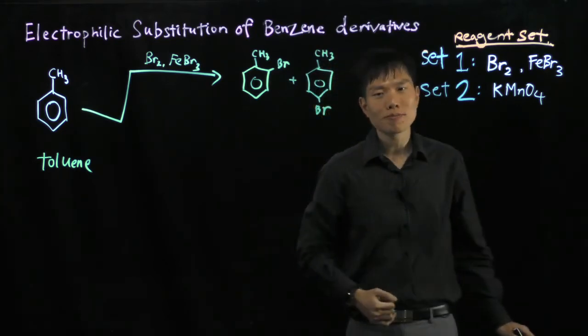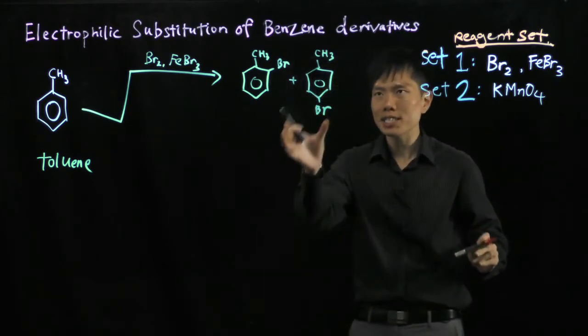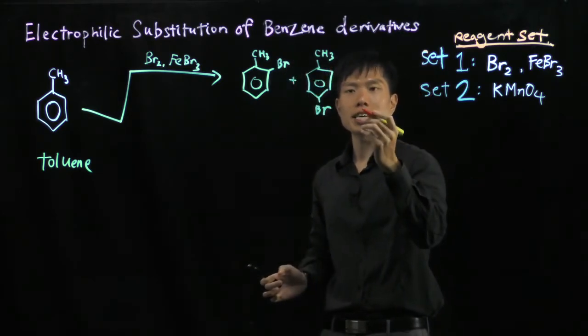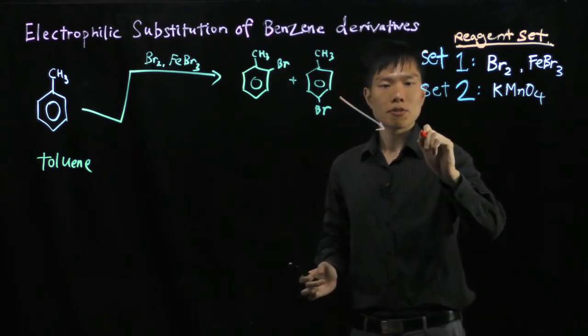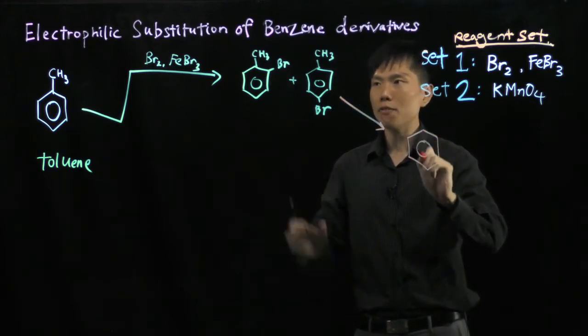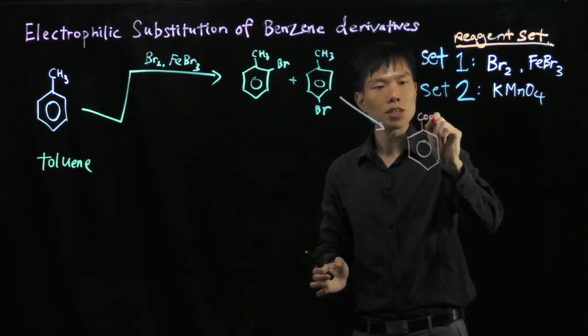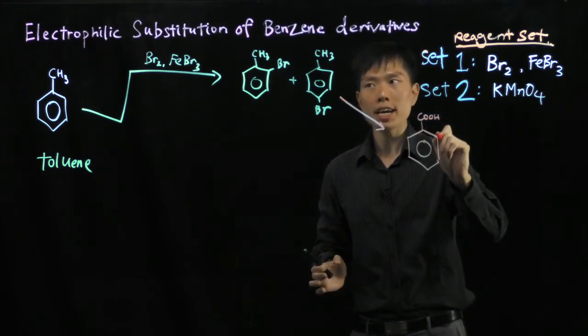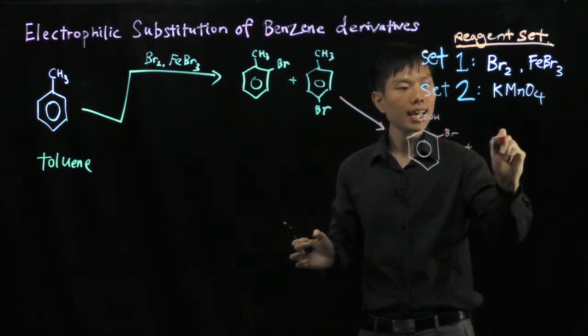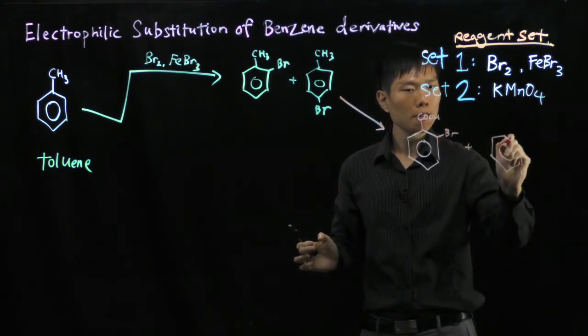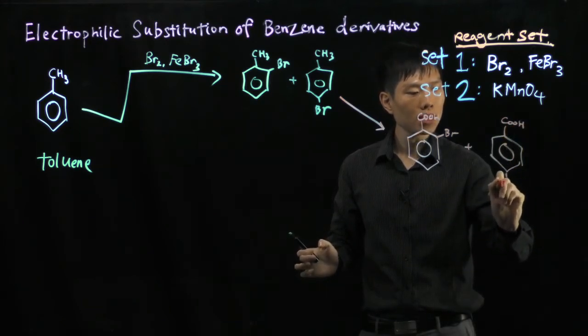Now let's treat with Set 2. Potassium permanganate can oxidize this alkyl group into benzoic acid, which means at the end of the day we have two different molecules. The CH3 becomes COOH, the Br stays intact, giving us 2-bromobenzoic acid and 4-bromobenzoic acid.